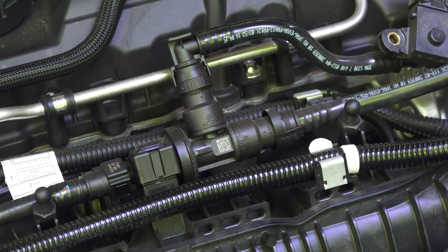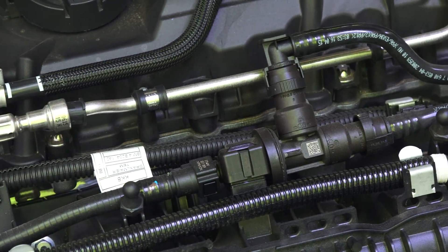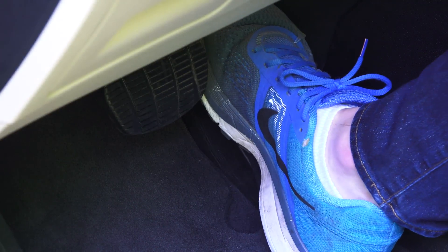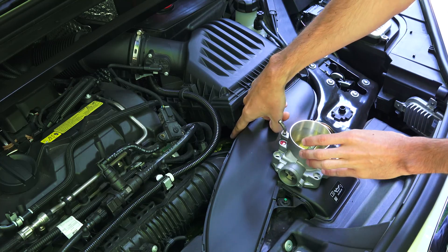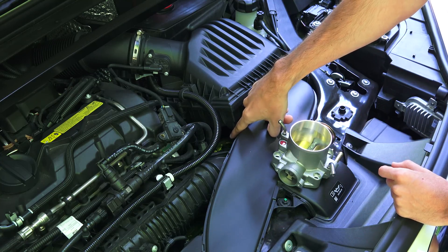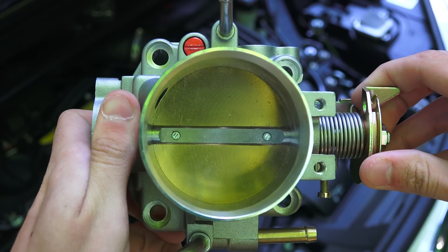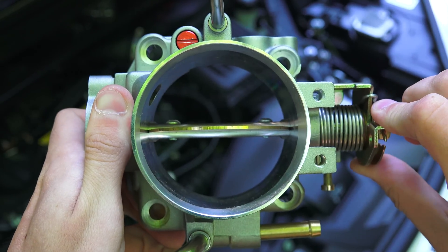In BMW engines with Valvetronic, however, a throttle valve is not necessary. When you press the gas pedal, you're altering how much the intake valves open. There is a throttle valve in these engines, but it's simply used as a fail-safe. Under normal operating conditions, the valve will always remain fully open.